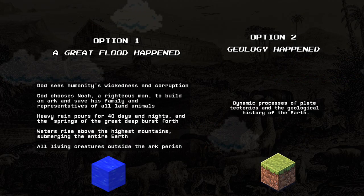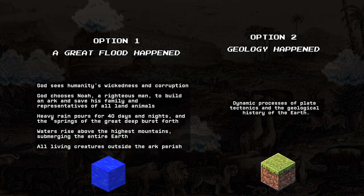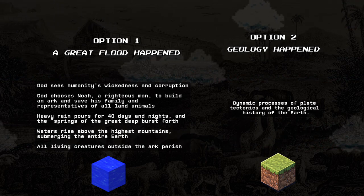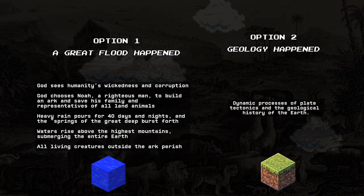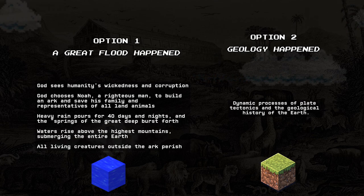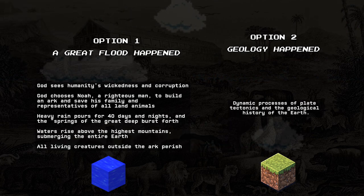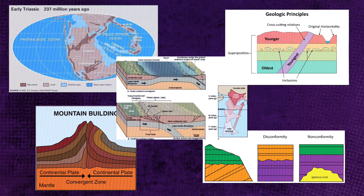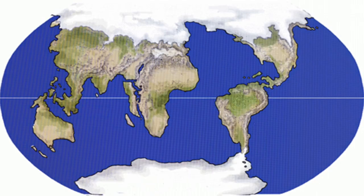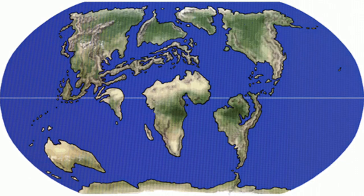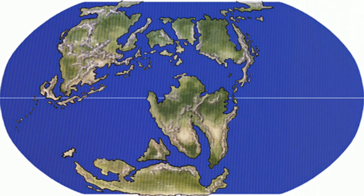According to Occam's razor, the second explanation is preferable because it makes fewer assumptions and does not require invoking extraordinary phenomena like a worldwide flood. It relies on well-established principles of geology and gradual changes over long periods of time, which are simpler and more parsimonious explanations for the observed evidence.